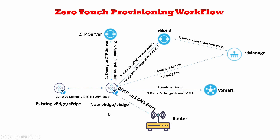I've put up an entire diagram for this, and I'll walk through it step by step. The components shown include an existing vEdge or cEdge — Viptela was a separate SD-WAN entity later acquired by Cisco, so vEdge terminology has been partly converted to cEdge (Cisco Edge). The ZTP server is at the URL ztp.viptela.com and is used for Zero Touch Provisioning in this architecture.